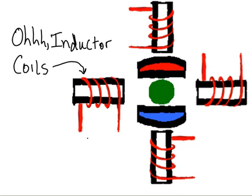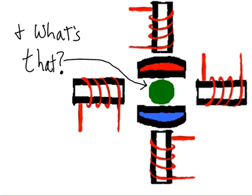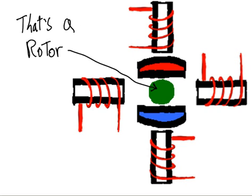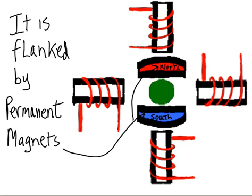Oh, inductor coils. What's that? That's a rotor. It is flanked by permanent magnets. There's the north, there's the south.